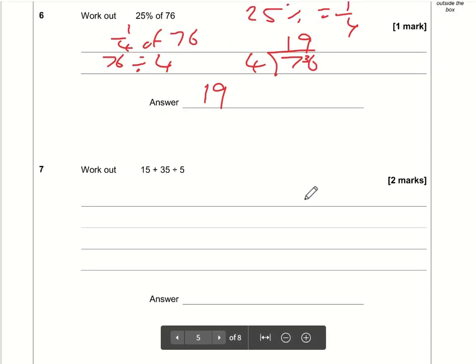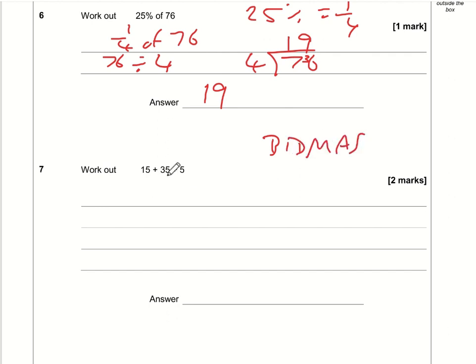Question number 7. This is simply a test of BIDMAS. In this question we've got adding and dividing - we need to do the dividing first. 35 divided by 5 is 7, so the question is now 15 plus 7 which is 22.